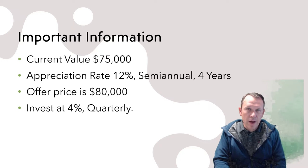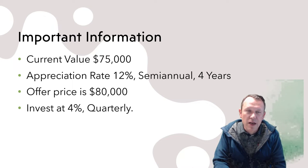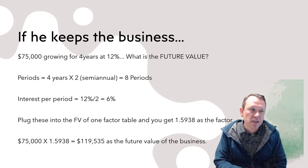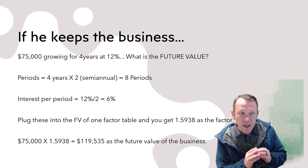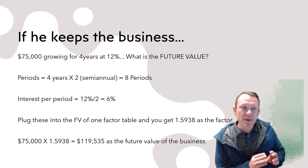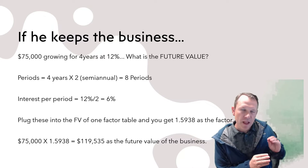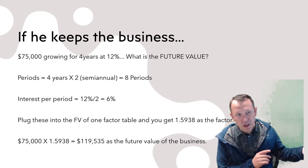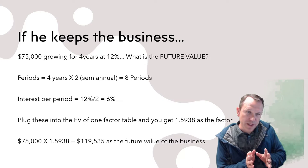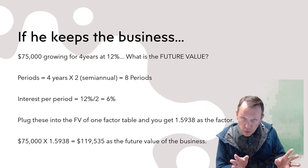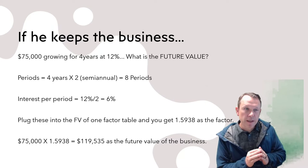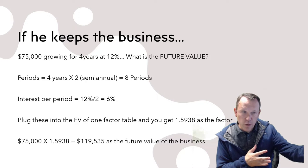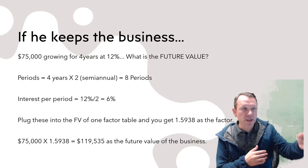Now that we have the important information, let's walk through this. If Pete keeps the business, it's currently worth $75,000 and it's going to grow for four years at 12% semi-annual compounding. So what's the future value? We can calculate that.